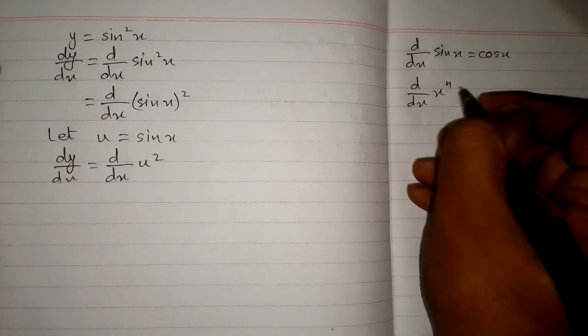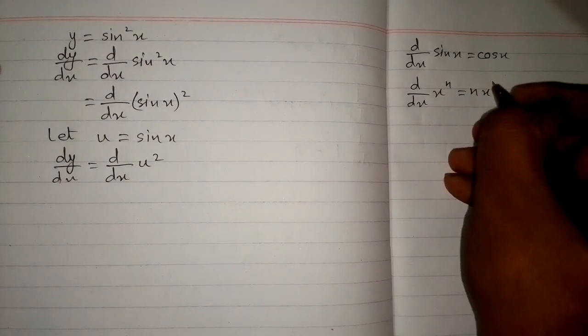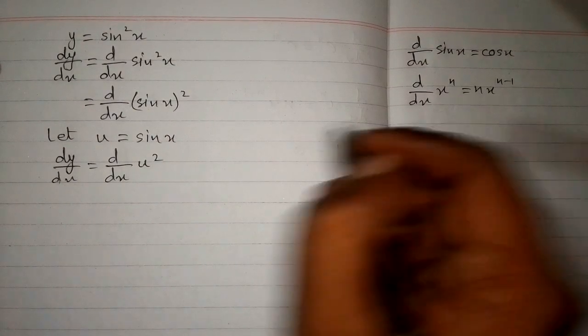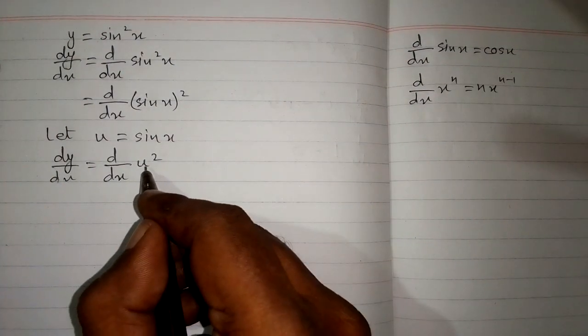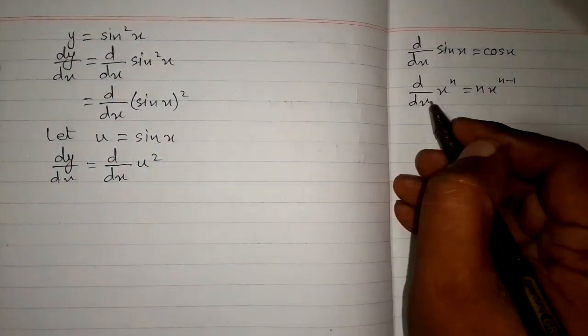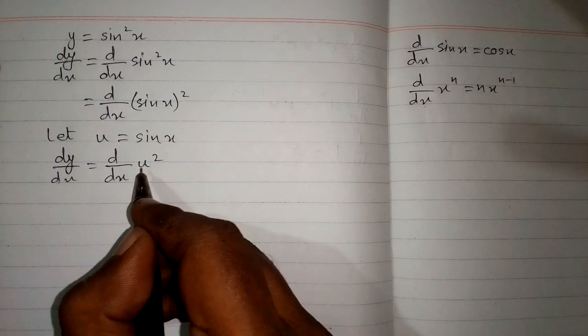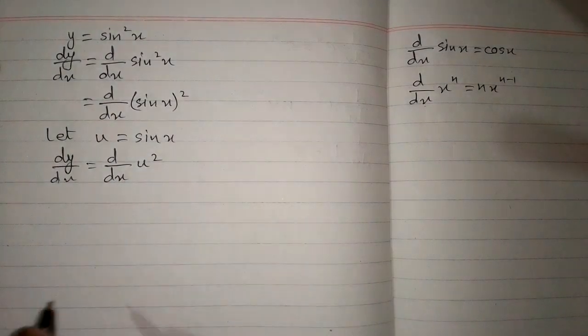We know that the derivative of x^n is n·x^(n-1), which is the power rule of differentiation. We can apply this formula because we have u², but the variables must match. We can see that the variable u and the variable x are not the same.